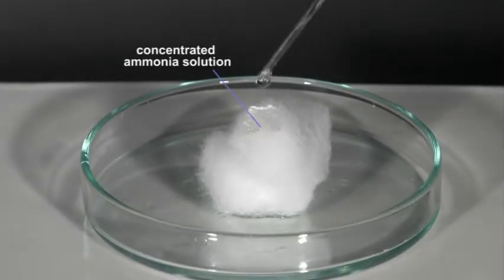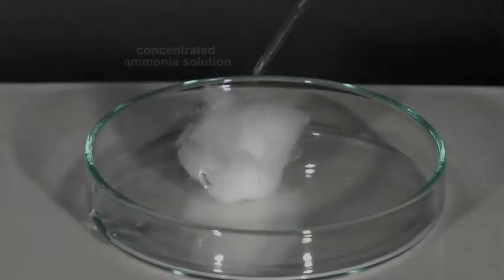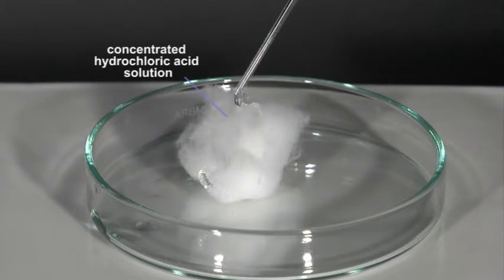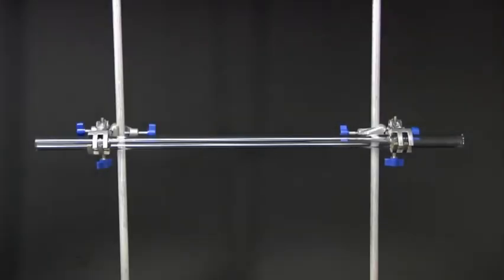Cotton wool is soaked with a little concentrated ammonia solution. A second wad is similarly treated with concentrated hydrochloric acid solution.